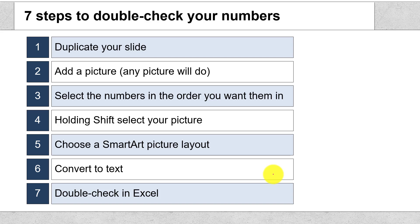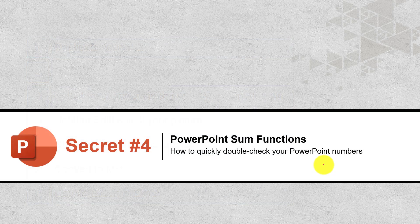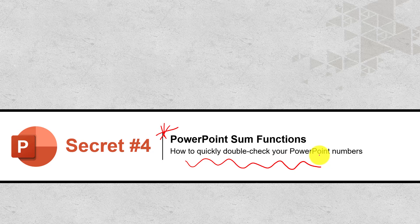So the steps again: duplicate your slide, add any picture (you'll lose it in the conversion process), then select the numbers in the order you want them — this is super important. If you select vertically, they stack vertically; horizontally, they stack horizontally. Then select your picture, push it through SmartArt using the Picture Format tab, convert to text, and double-check your numbers in Excel. That is your fourth PowerPoint Insider Secret — how to get around the lack of PowerPoint sum functions to quickly verify you're presenting correct information.